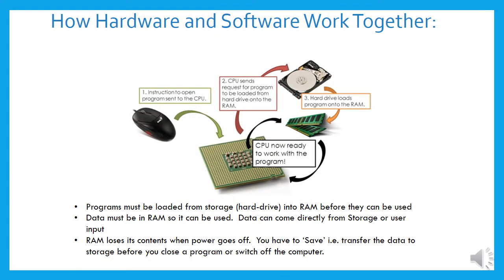So if you give an instruction to open a program to the CPU — you double-click on an icon on the screen — that gives a command to the CPU. The CPU then sends a request, and that program has to be loaded from the hard drive into RAM. The hard drive loads the program into the RAM, and then the CPU is ready to work with the program. So programs must be loaded from storage into RAM before they can be used.